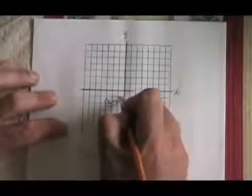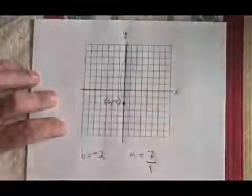Rising 7 means going up to here. And a run of 1 means I go over to here. Here's my second point. It has the coordinates (1, 5).